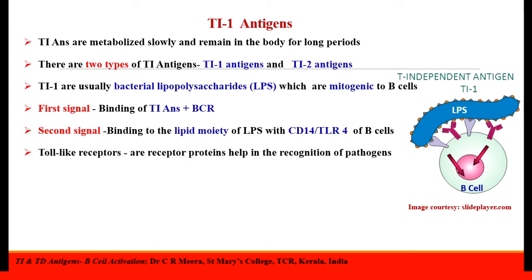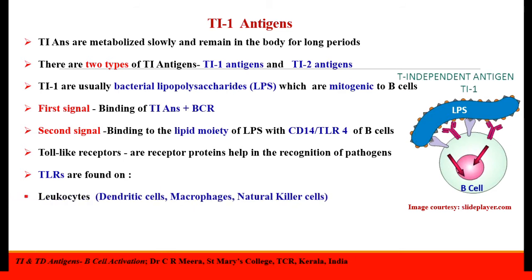TLRs, or Toll-like receptors, are receptor proteins that help in the recognition of a wide array of pathogens and are found on membranes of leukocytes including dendritic cells, macrophages, natural killer cells, as well as immune cells like T-cells and B-cells, and on non-immune cells like epithelial, endothelial cells and fibroblasts.